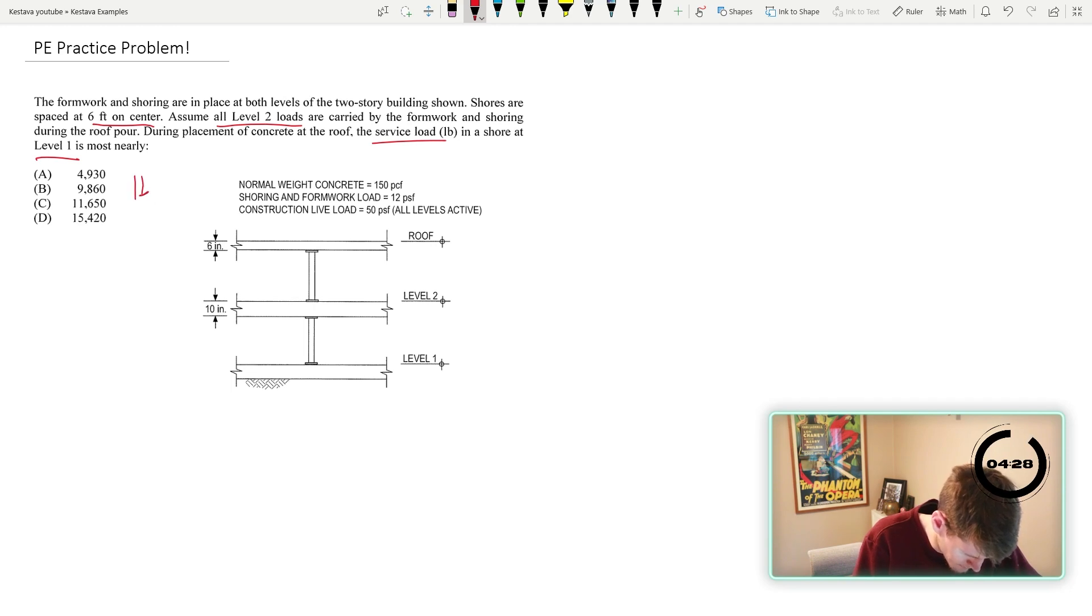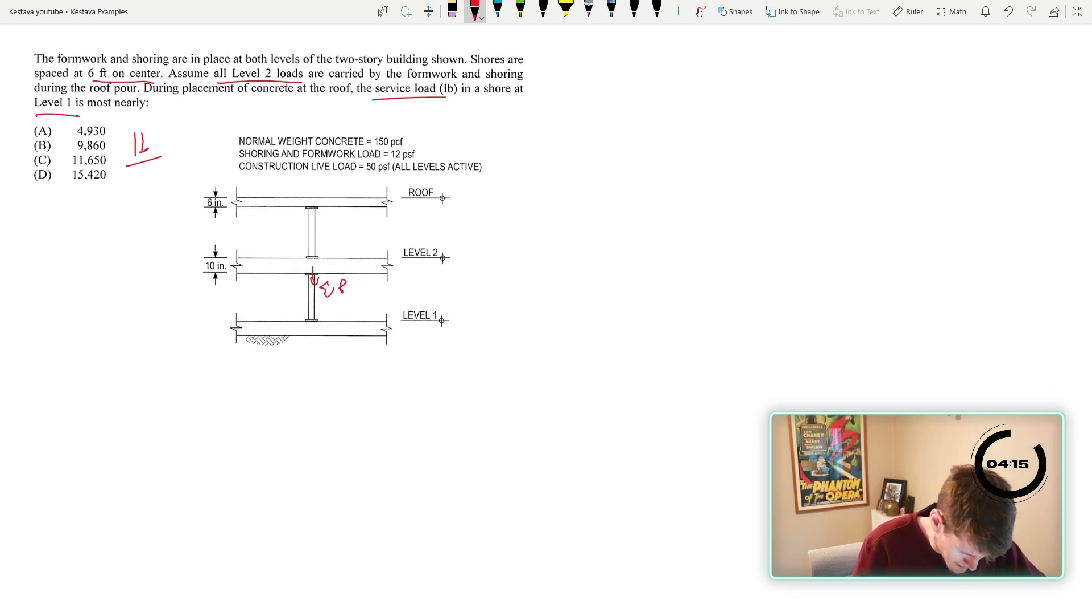And this looks like pounds. They would give you the units for that. I don't know why they didn't for this one. Okay. And we have information up there. Okay. So we need to know what's that reaction. What's that summation P? Okay. Service load means it's ASD or unfactored loads.